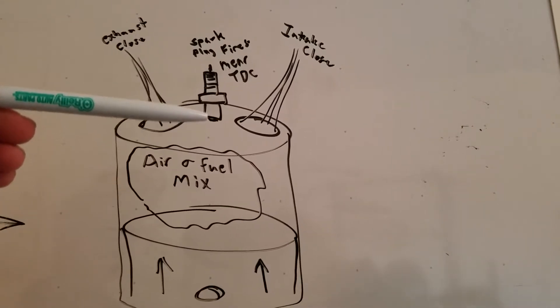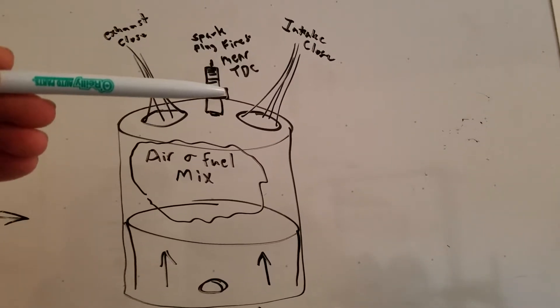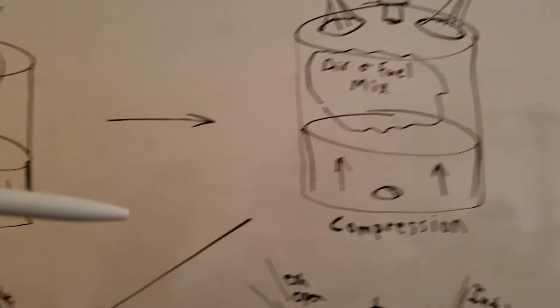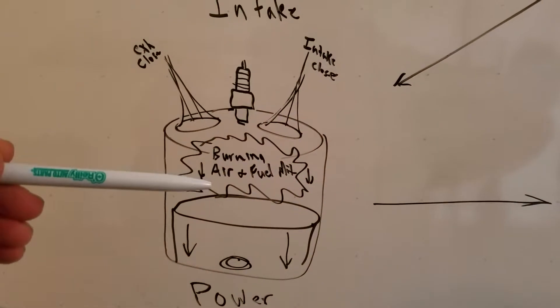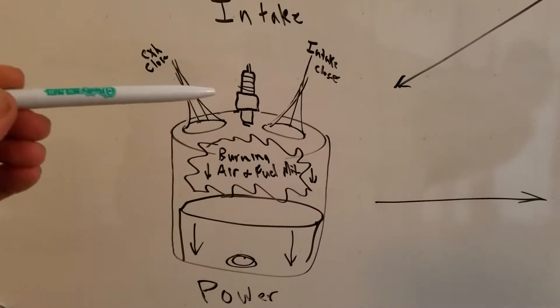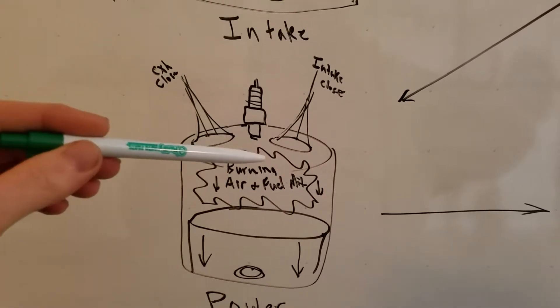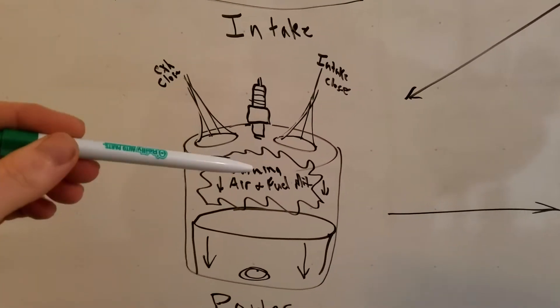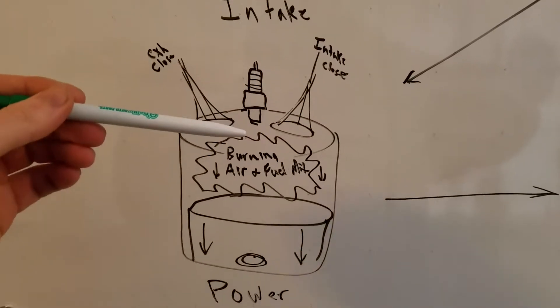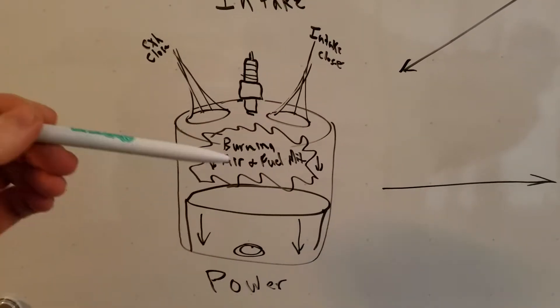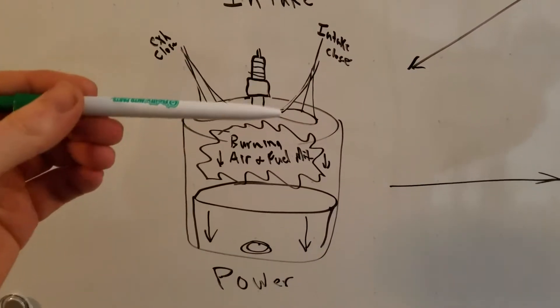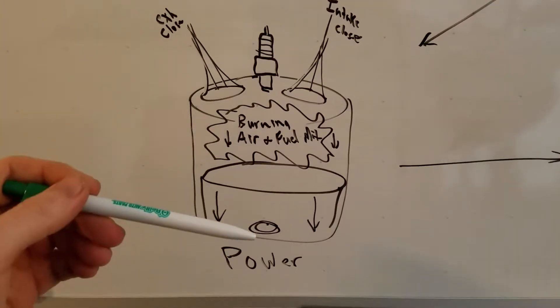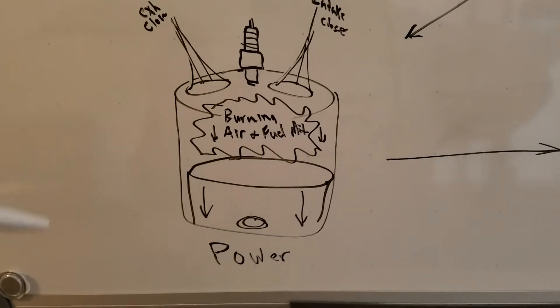Ultimately bringing us to the next sequence, which is going to be our power sequence. And here in the power sequence, that explosion from the fuel and the spark is going to push the piston back down. Our exhaust valve is closed, intake valve is closed. This pushes back down, ultimately creating the power to propel the engine.